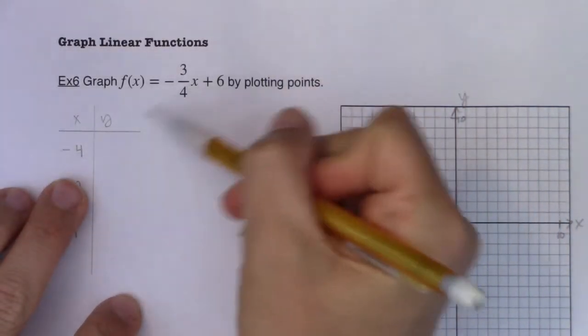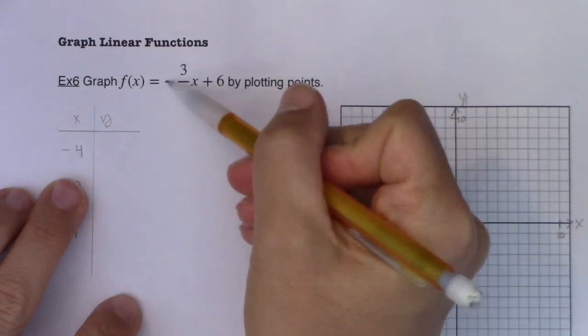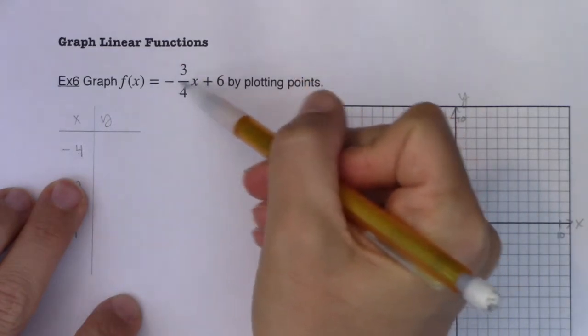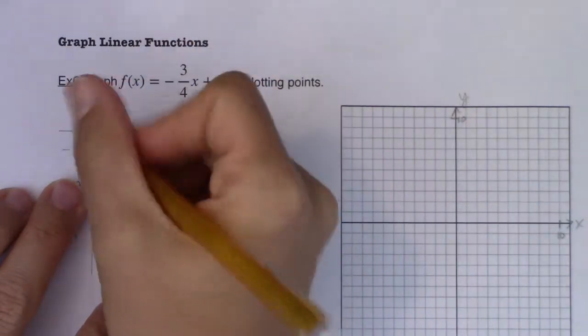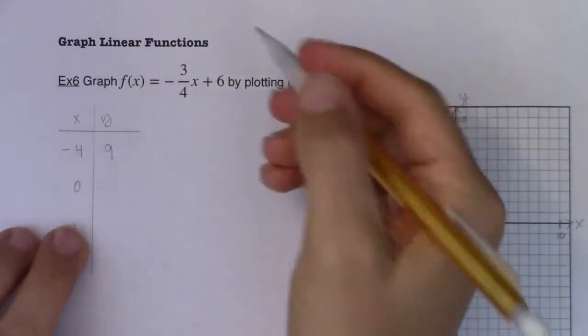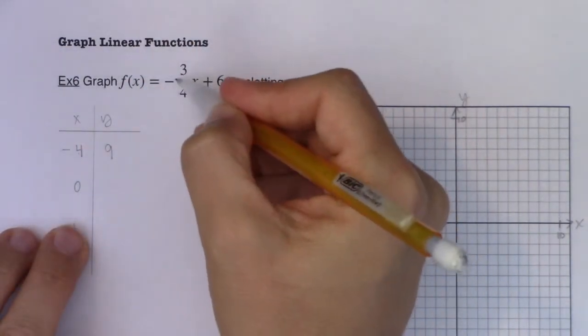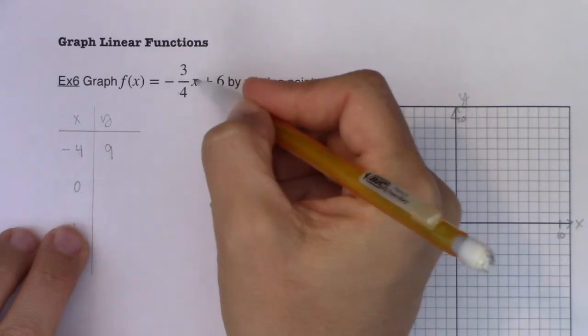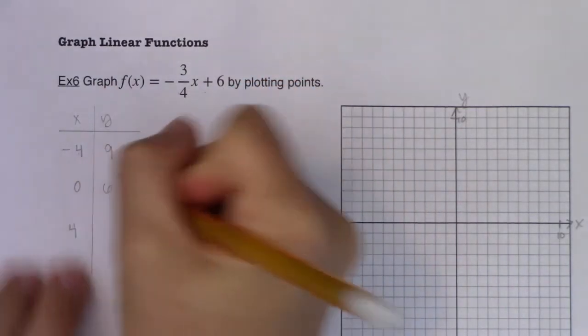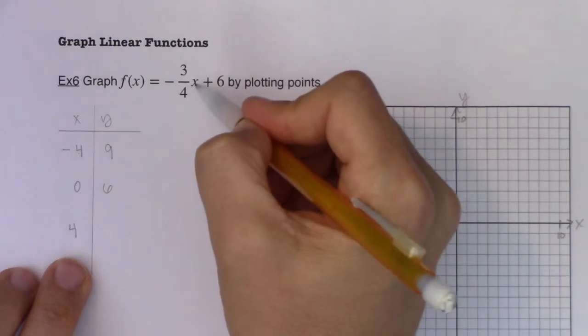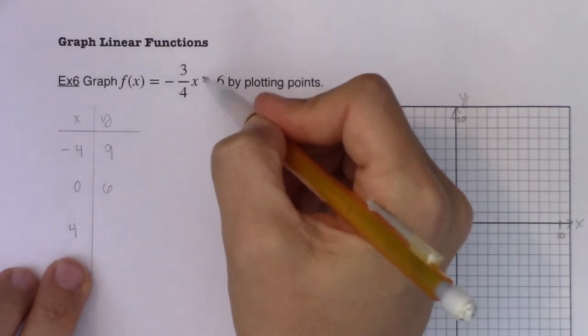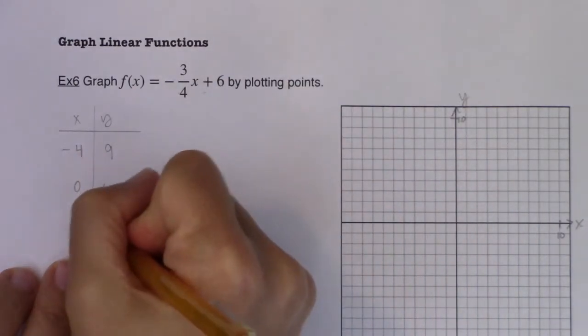If we plug this in, we'll have negative three-fourths times negative four. That's going to be positive three. Positive three plus six is nine. If I plug zero in, negative three-fourths times zero is zero, zero plus six is six. If I plug four in, negative three-fourths times four is negative three. Negative three plus six is three.